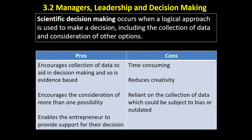The scientific decision-making process involves setting objectives, collecting data, analysing that data, and putting numerical values on options before making your decision. The pros of doing this are that it encourages data collection so the decision is evidence-based.